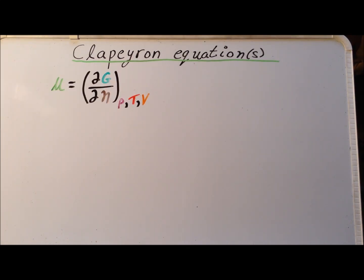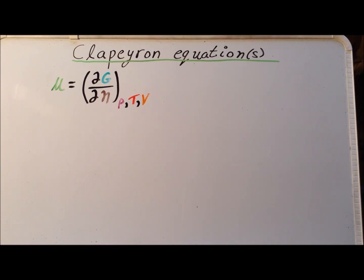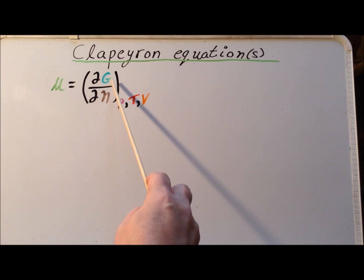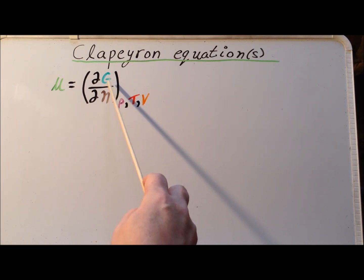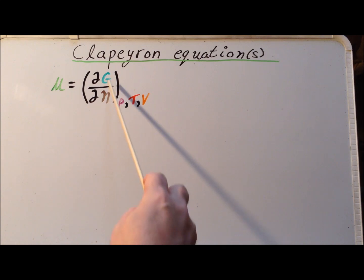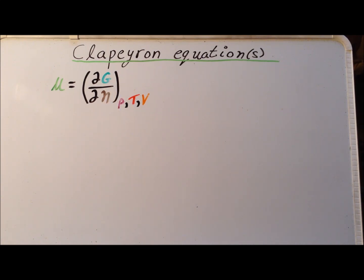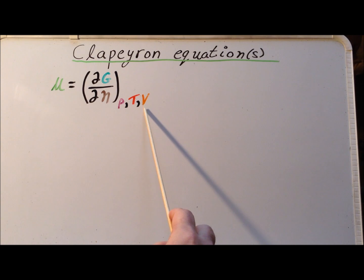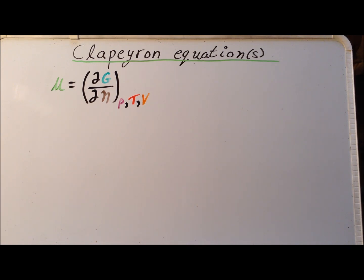First, we designate and define a new quantity, mu, which we call the chemical potential. That is the derivative of the Gibbs energy with respect to the number of molecules present, while keeping the pressure, temperature, and volume, and the number of other molecules constant.